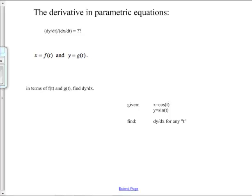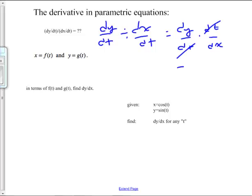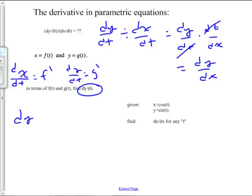Now let's think about derivatives in parametric equations. If I compute dy/dt divided by dx/dt, the dt's cancel and we're left with dy/dx. So if x equals f(t) and y equals g(t), then dx/dt is f′ and dy/dt is g′. To find dy/dx, it's simply g′ over f′.